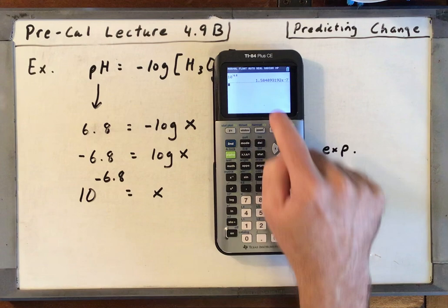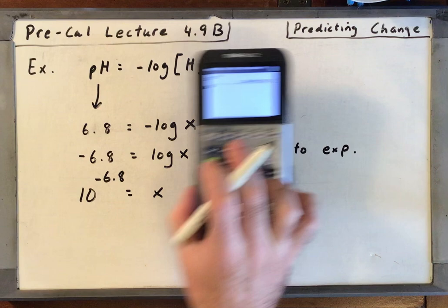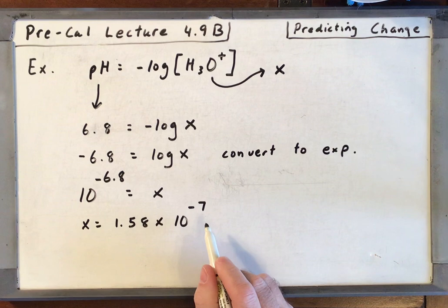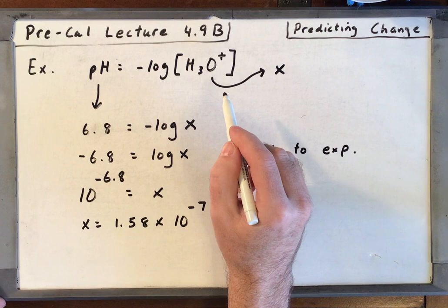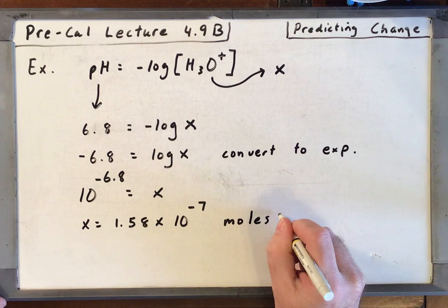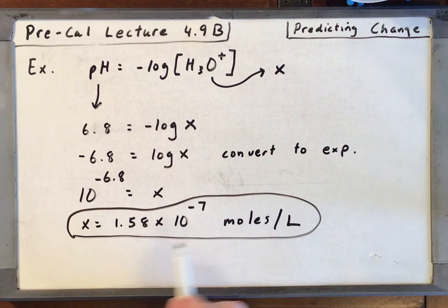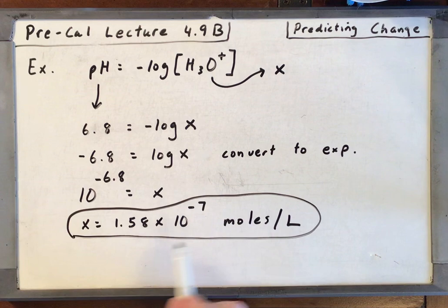10 raised to the negative 6.8. That's 1 point we're going to have scientific notation. 1.58 times 10 to the minus 7. So a very small number of the hydronium ion. And the unit, it says in the problem, is moles. If you've had chemistry, you'll know what this means per liter. All right, moles per liter. And if you're currently in my chemistry class in chapter 10, you're going to know what that means.